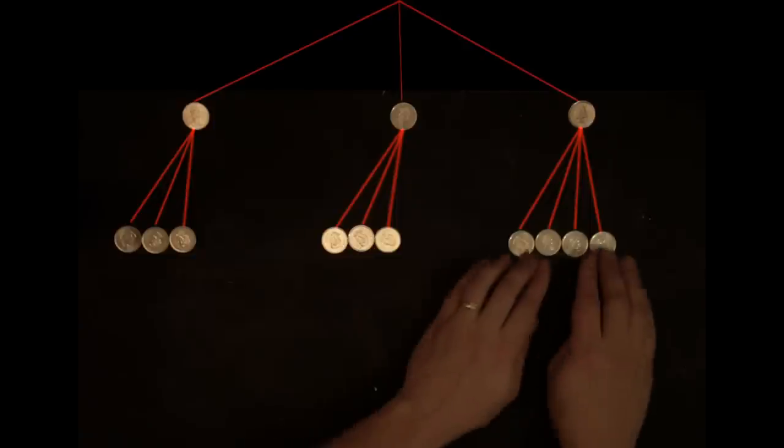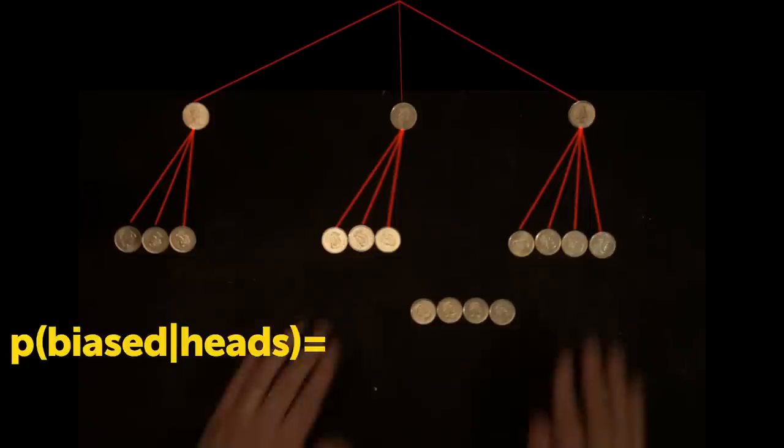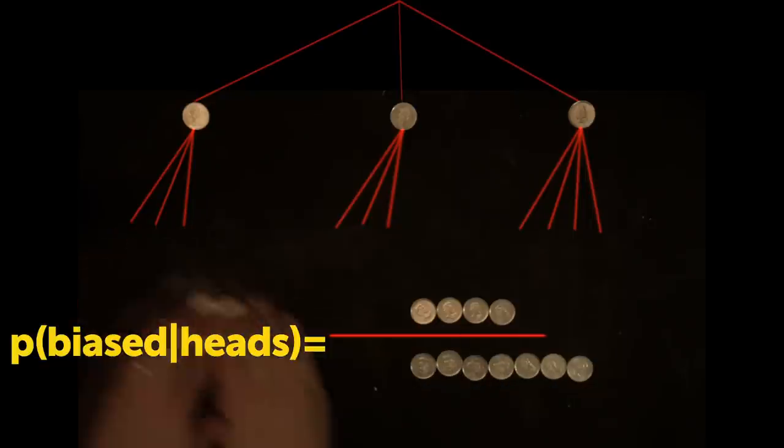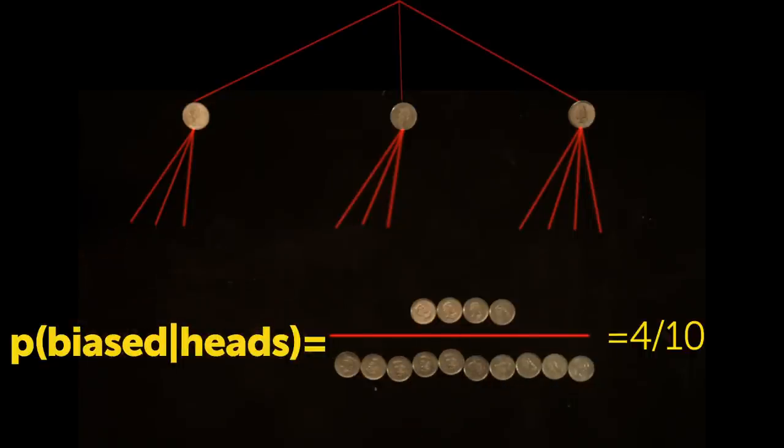Well, four leaves can come from the bias coin, divided by all possible leaves. Four divided by ten, or forty percent.